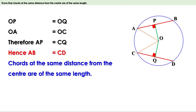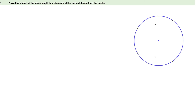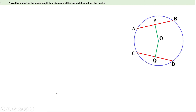Now let us draw a circle with center O and draw two chords of the same length. Let them be AB and CD. We have to prove that the distance from the center to these chords are equal. Let us draw perpendiculars from the center to the chords. Let them meet the chords at P and Q respectively. Then OP and OQ are the distances from the center to the chords. We have to prove that OP equals OQ.